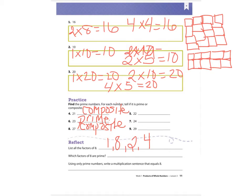Then they want to know which factors of eight are prime. The number one would be considered neither — and eight and four both have other factors, so those are composite. That leaves two as the only prime factor of eight.